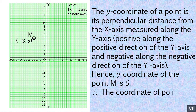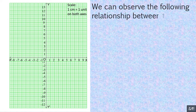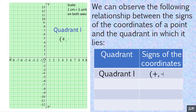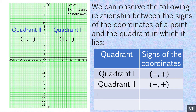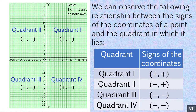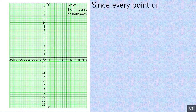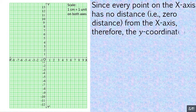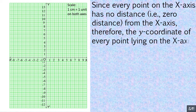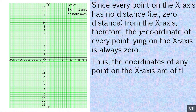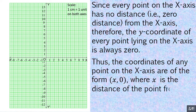Therefore, the coordinates of point M are (−3, 5). We can observe the following relationship between the signs of the coordinates of a point and the quadrant in which it lies. Since every point on the x-axis has 0 distance from the x-axis, the y-coordinate of every point lying on the x-axis is always 0. Thus, the coordinates of any point on the x-axis are of the form (x, 0), where x is the distance of the point from the y-axis.